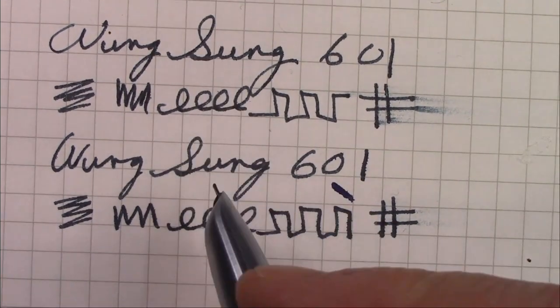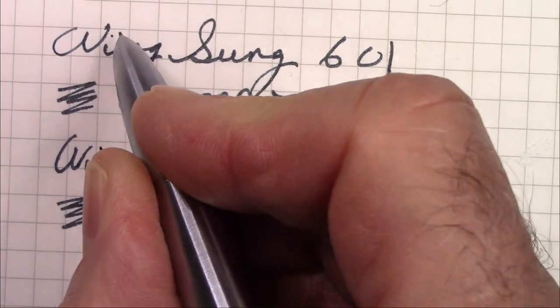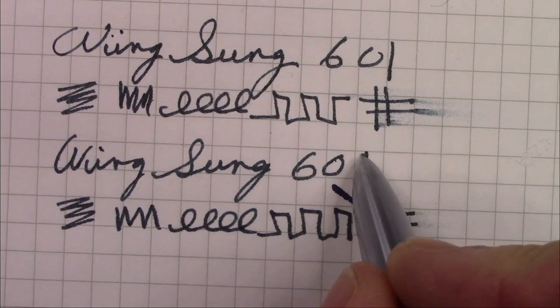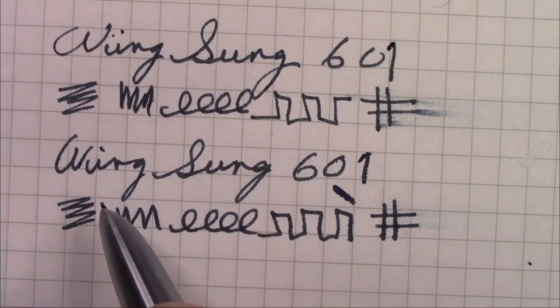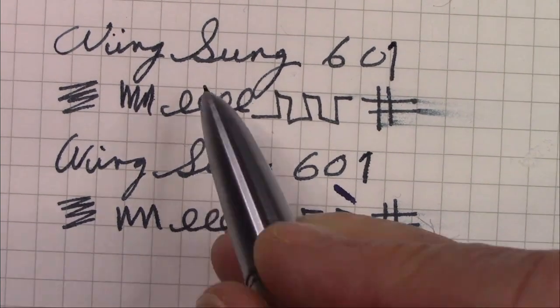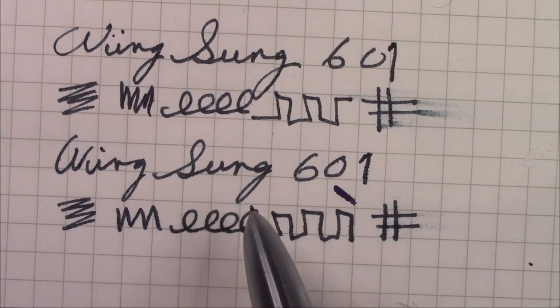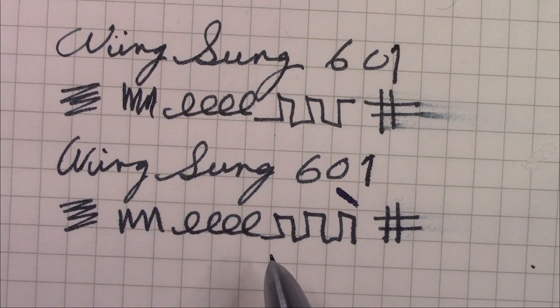These nibs write very similar. I think the nib here is slightly wetter. It lays down as just a little bit of a broader, darker, wetter line. Both of these have 54th Massachusetts in them, so same ink.